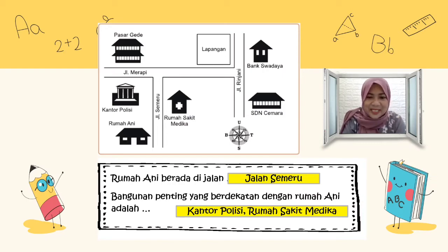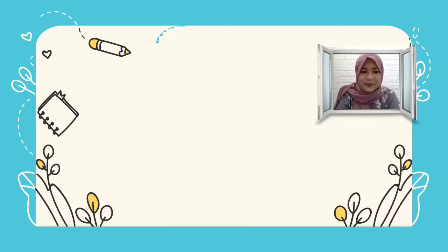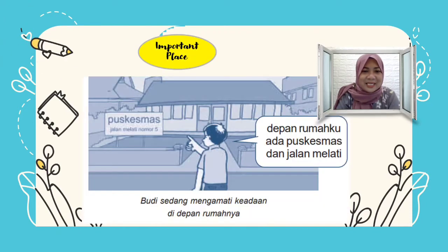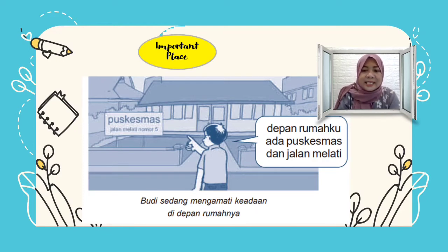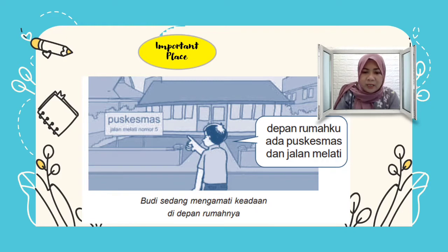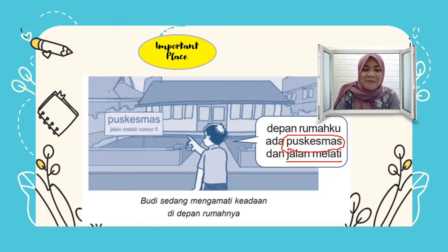Ini adalah important places atau tempat-tempat penting yang menjadikan patokan atau penanda rumah seseorang. Selanjutnya, masih important places. Ini ada gambar — ini namanya Budi. Budi sedang mengamati keadaan di depan rumahnya. Ternyata di depan rumah Budi ada puskesmas yang berada di Jalan Melati. Rumah Budi berada di Jalan Melati, dan juga ada puskesmas di depan rumahnya. Ini bisa dijadikan penanda bangunan penting yang berdekatan dengan rumah Budi.